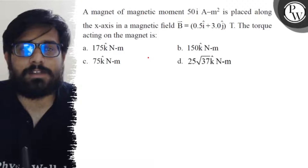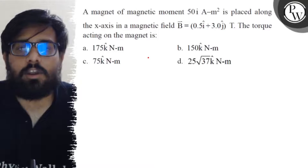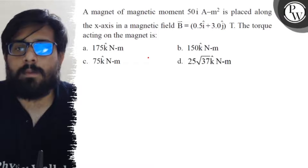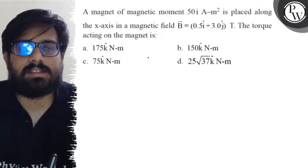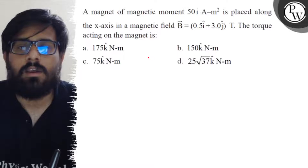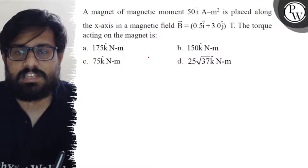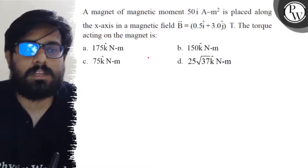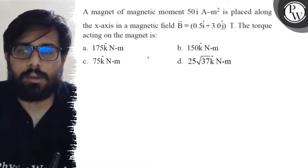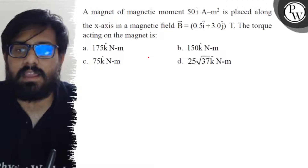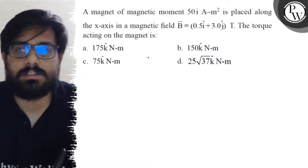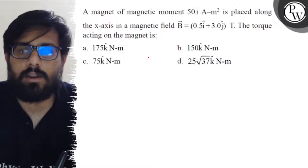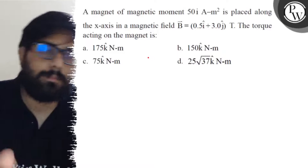Hello, so let's see the question. A magnet of magnetic moment 50 î ampere meter squared is placed along the x-axis in a magnetic field of 0.5 î plus 3 ĵ tesla. The torque acting on the magnet is: first option 175 k̂ newton meter, second option 150 k̂ newton meter, third option 75 k̂ newton meter, and fourth option 25√37 k̂ newton meter.